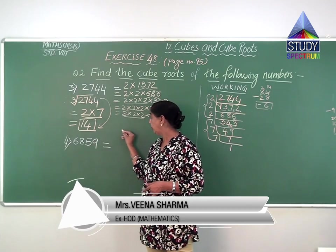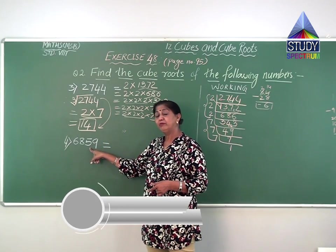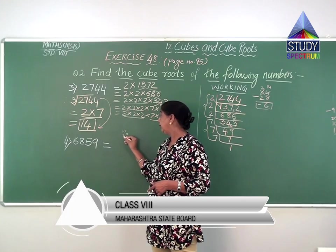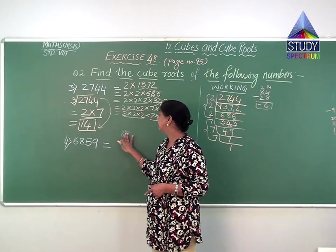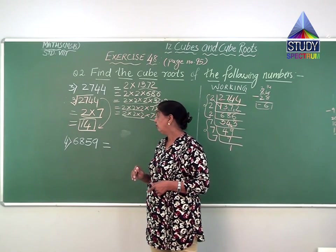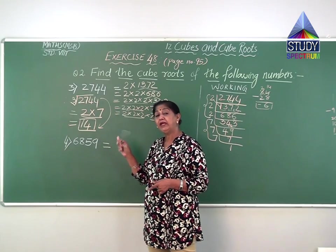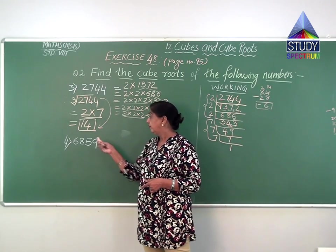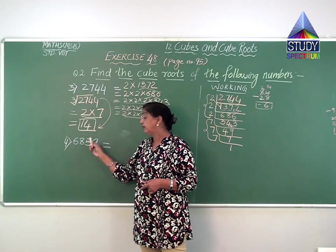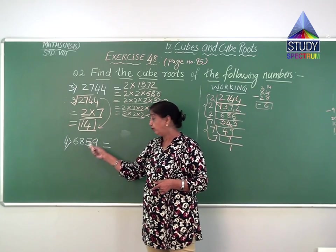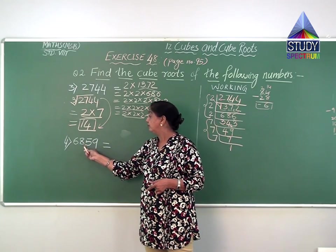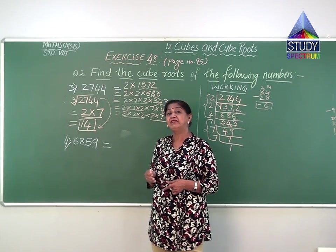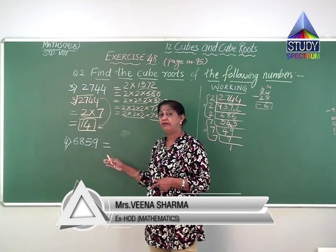For the number 6859: 6 plus 8 gives 14, plus 5 gives 19, plus 9 gives 28. Since 28 does not come in the 3 times table, it is not divisible by 3. It also does not go by 7's table — trying 7 nines are 63, but further digits don't work out. We also try 9's table but that does not work either.